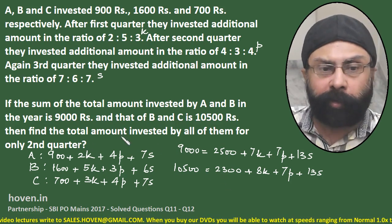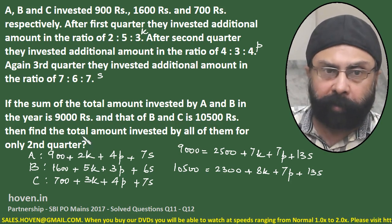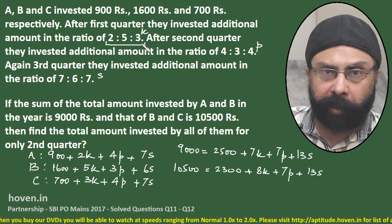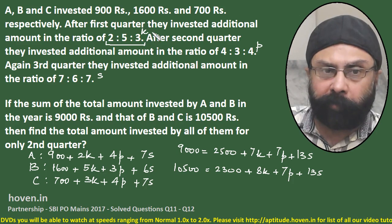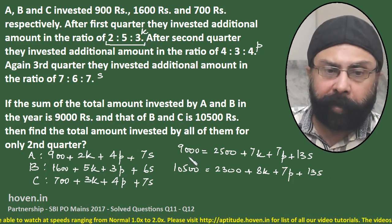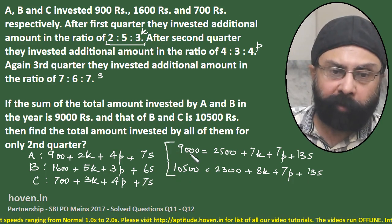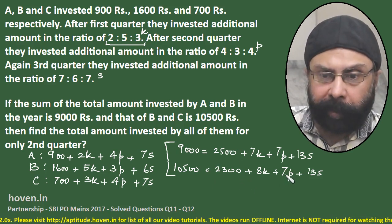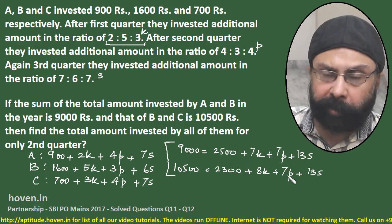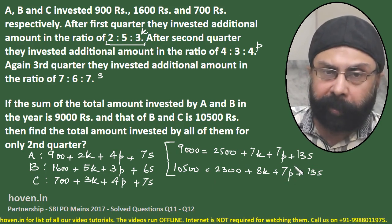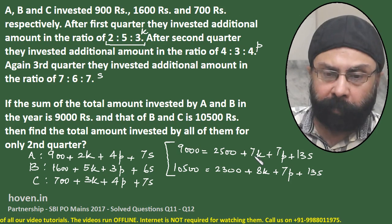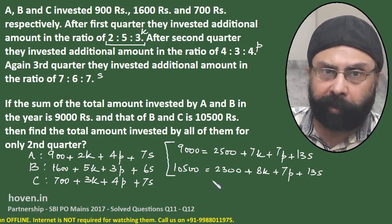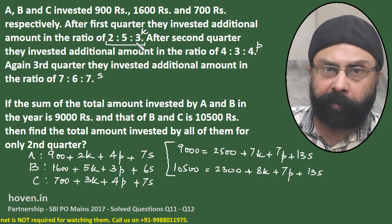What is asked is the total amount invested for only the second quarter, which is 2k + 5k + 3k = 10k. So we need the value of k. Our effort should be to find k from the two equations. We can see that 7p and 13s appear in both equations — they are the same figures. We can get rid of them by subtracting the equations, leaving k and some constants.